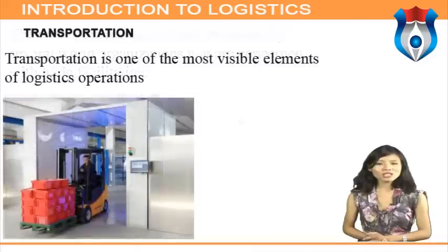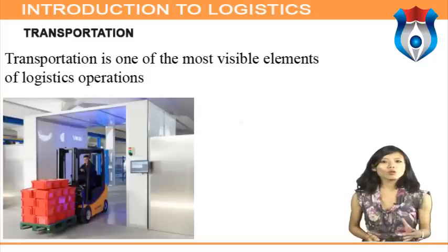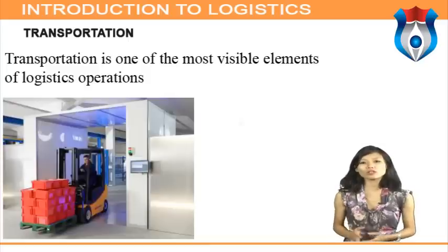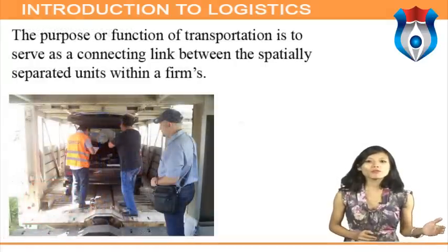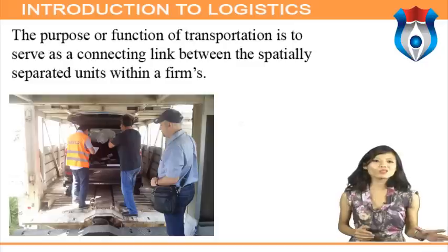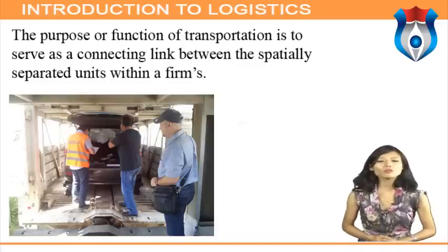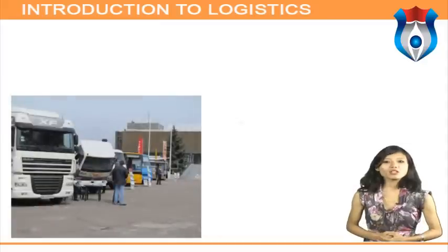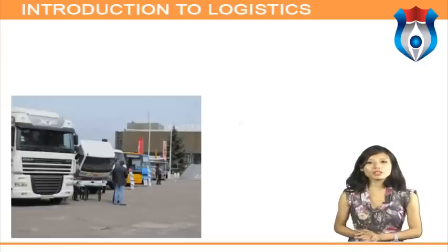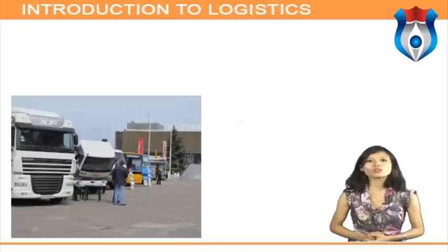Transportation is one of the most visible elements of logistics operations. The role of transport in the national economy is very crucial — every business firm requires movement of goods from one point to another. The purpose of transportation is to serve as a connecting link between spatially separated units within a firm's own organization, such as between plants and warehouses, and between units of other firms and individuals. The spatial dimension refers to geographical relationships reflecting the combination of firms with respect to their material sources, markets, and competitors.